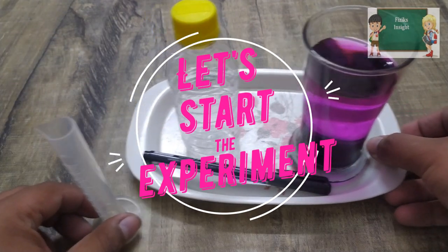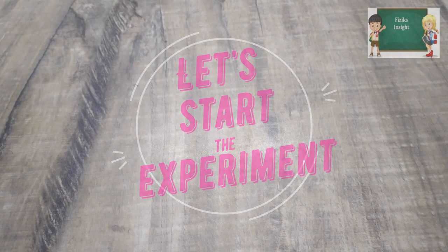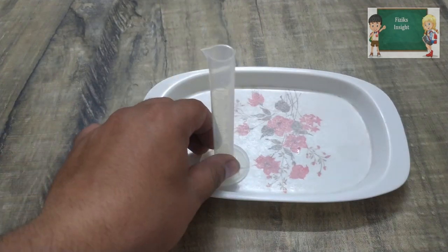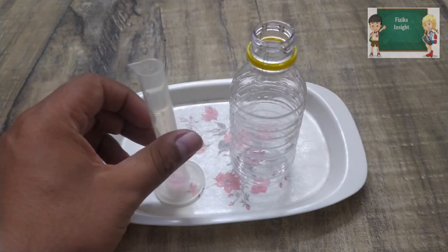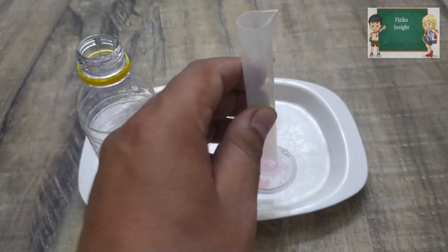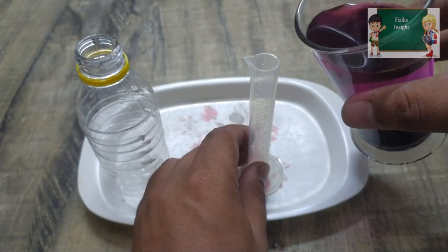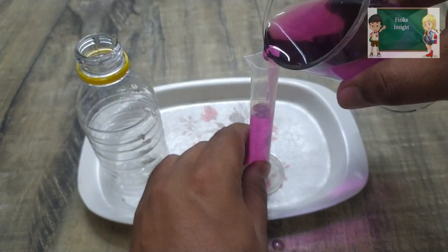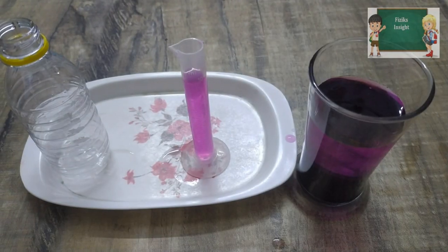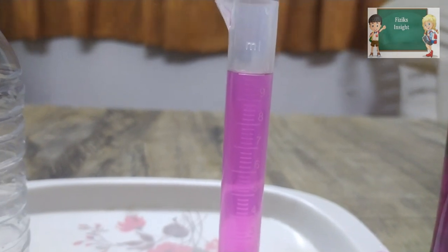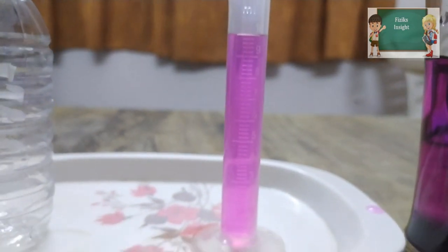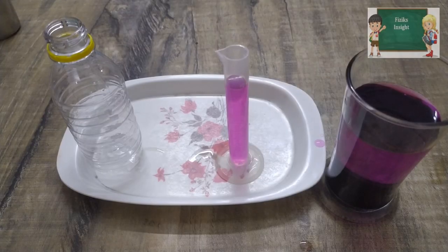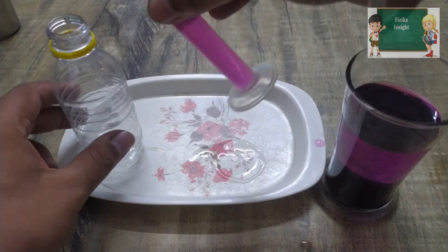Let's follow the procedure. Take an empty bottle and cylinder, place them on the spill collector. Measure 10 ml of colored water using the measuring cylinder, then add it to the empty bottle.